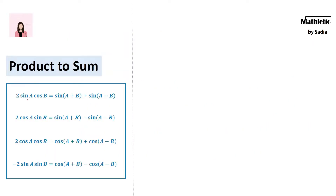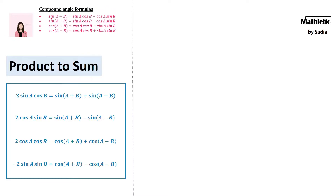As we can see, we have the multiplied version of these trigonometric terms on the left side, but we have an addition of two terms on the right — that's why these are called product-to-sum. To derive these four product-to-sum identities, we need to use the compound angle formulas.